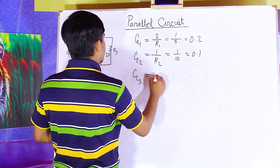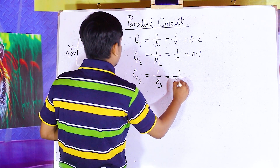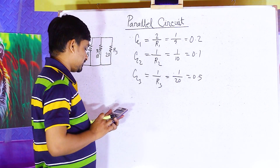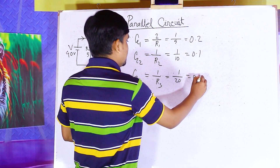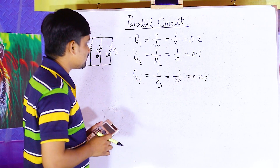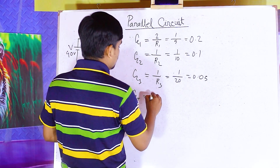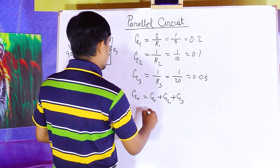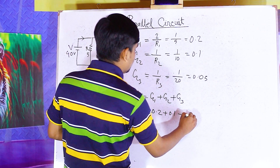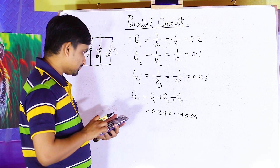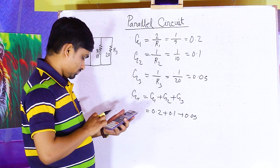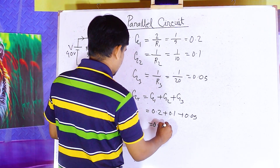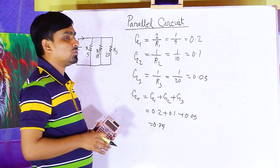The third resistor: G3 equals 1 divided by R3, equals 1 divided by 20, equals 0.05. Now, total conductance Gt equals G1 plus G2 plus G3, equals 0.2 plus 0.1 plus 0.05, equals 0.35. So the total conductance is 0.35 siemens.